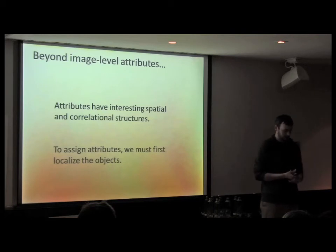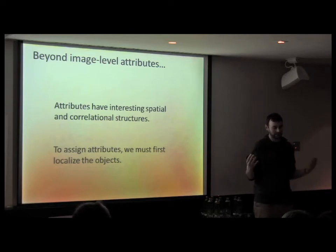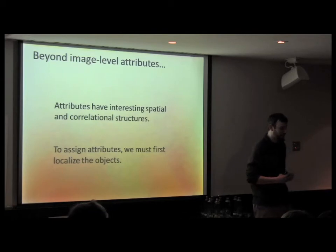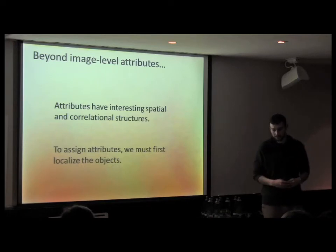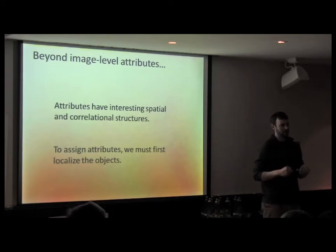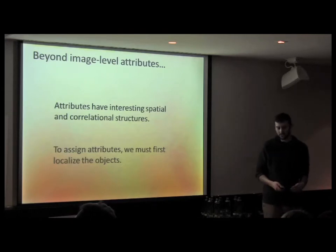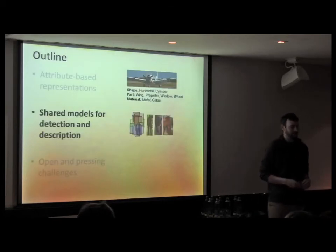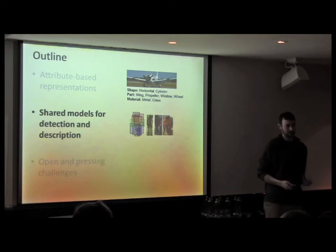One thing we weren't too satisfied with is that we're just labeling everything at the image level — not taking into account the correlational structure among attributes or interesting spatial relations for parts and shape. Also, with that work, you're given a picture of an object and assigning attributes to it, but in natural images you first need to be able to find the object. So the next work tries to deal with those two problems — learning shared models of appearance and spatial layouts so that we can find and describe novel objects in images.